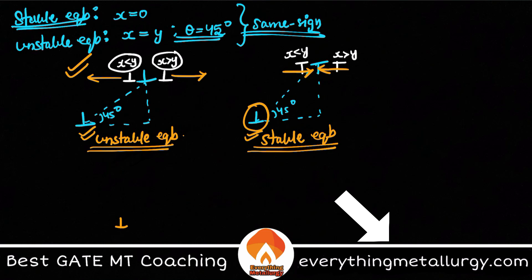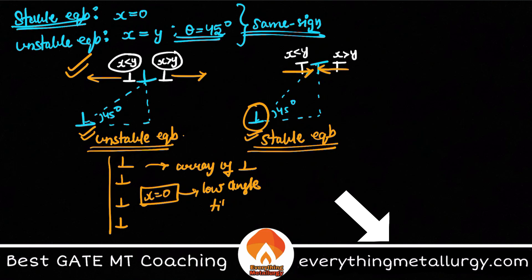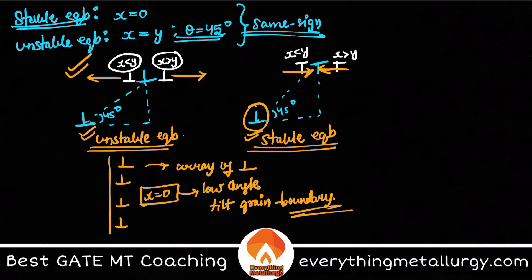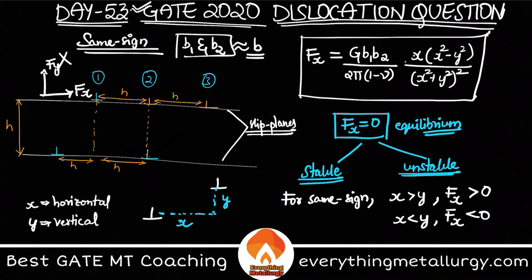One of the most stable equilibrium configurations for same-sign dislocations is when x equals zero. This arrangement — an array of dislocations — is actually found at low-angle grain boundaries. This is an important physical description of how grain boundaries can be explained using dislocation theory.